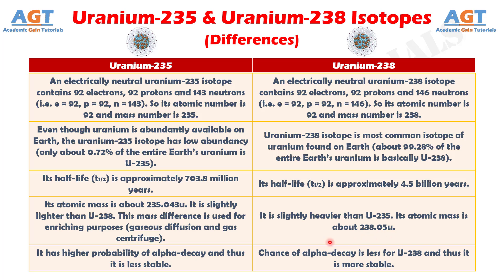Number 5. Uranium-235 has a higher probability of alpha decay and thus it is less stable, whereas the chance of alpha decay is less for Uranium-238 and thus it is more stable.